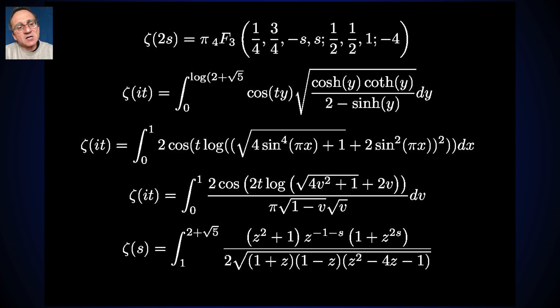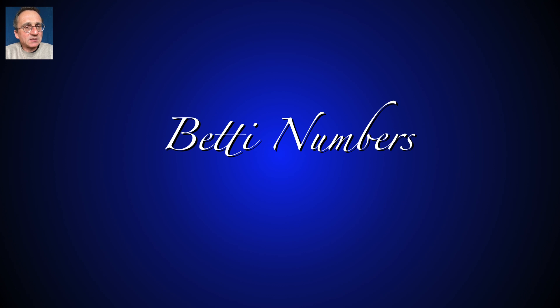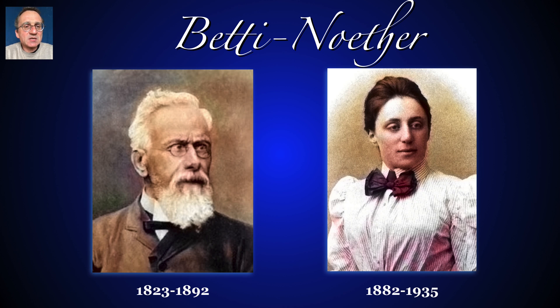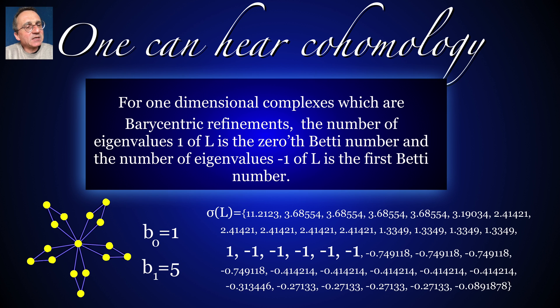Here are other expressions for this zeta function in the limit. One of them is an abelian integral. Now to the Betti numbers. They were introduced by Betti and further work done by Emmy Noether. So one can hear the homology of one dimensional complexes. So here is an example we mentioned already. But you look at the spectrum. You look at the number of eigenvalues 1. That's your 0's Betti number. And then the number of eigenvalues minus 1. That's the Betti number B1. Quite interesting.